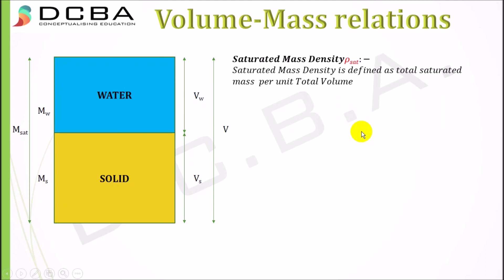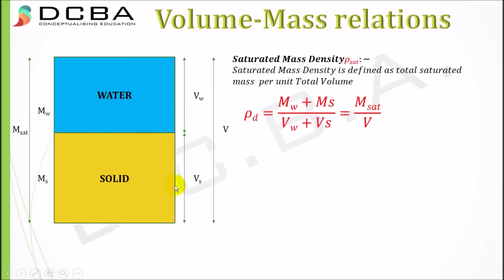Saturated mass density, as the name suggests, applies when the whole soil is saturated with no air. It is defined as the total saturated mass per total unit volume: ρsat = (Ms + Mw)/(Vs + Vw), which equals Msat/V.